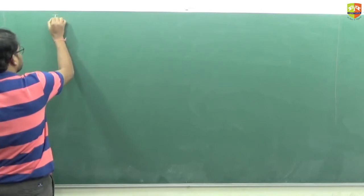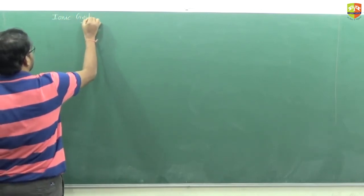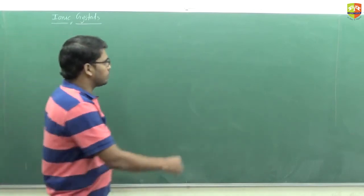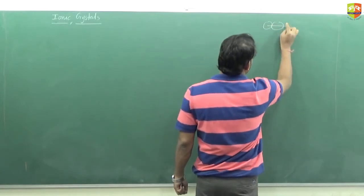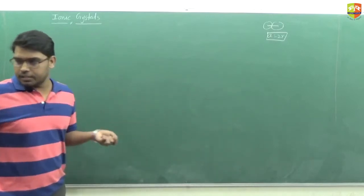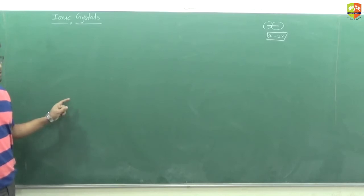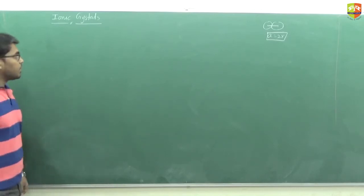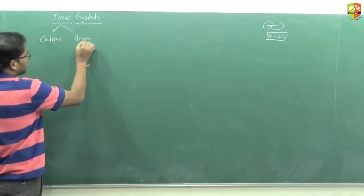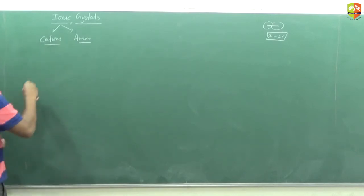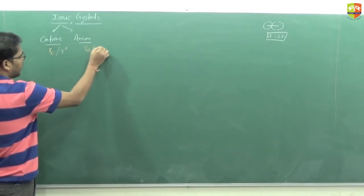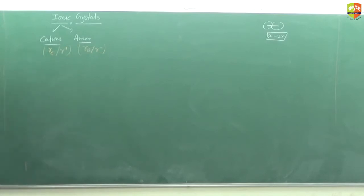Let us write down ionic crystals. Until now, whatever we have done — simple cubic, FCC, BCC unit cells — the radius of atoms are the same because it is a covalent crystal. But in ionic crystals, we will have ions: cations and anions, and their sizes will also be different. We will have two different radii: RC is the radius of the cation (or R+), and RA is the radius of the anion (or R−).